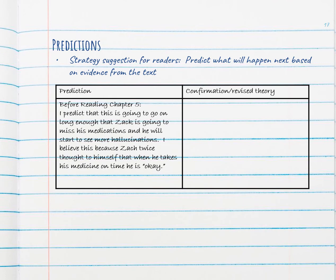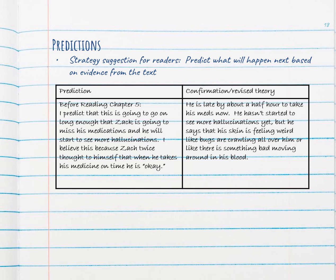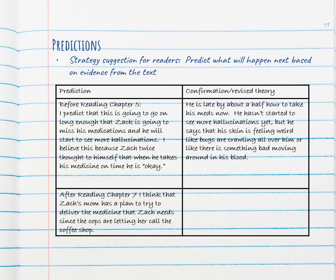So, before we read this chapter, or at the end of last chapter, I had made a prediction. I said, I predict that this is going to go on long enough that Zach is going to miss his medications and that he will start to see more hallucinations. I believe this because Zach twice thought to himself that when he takes his medication on time, he is okay. After reading, at this point, we know that he is late by about a half hour to take his meds. So, that part was correct. He hasn't really seemed to be having any more hallucinations yet, but he does say that his skin is feeling weird, like bugs are crawling all over it, or that there is something bad moving around in his blood, which seems like maybe he's starting to get worse.